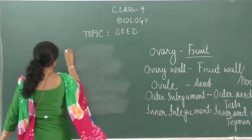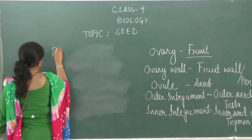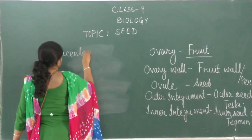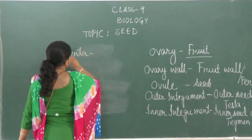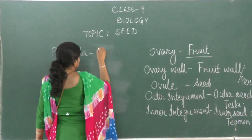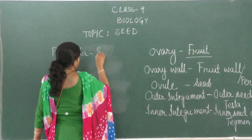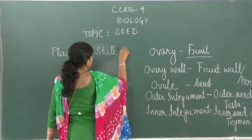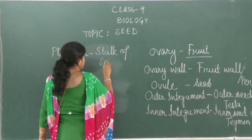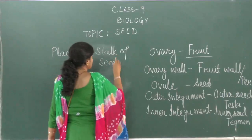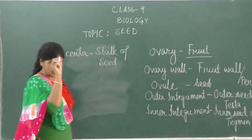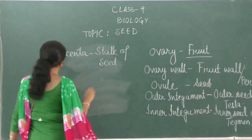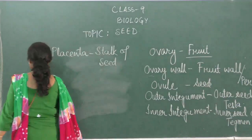The placenta changes to the stalk of the seed. This means the seed is attached to the fruit wall by a tiny stalk-like structure, and that is what the placenta changes into.